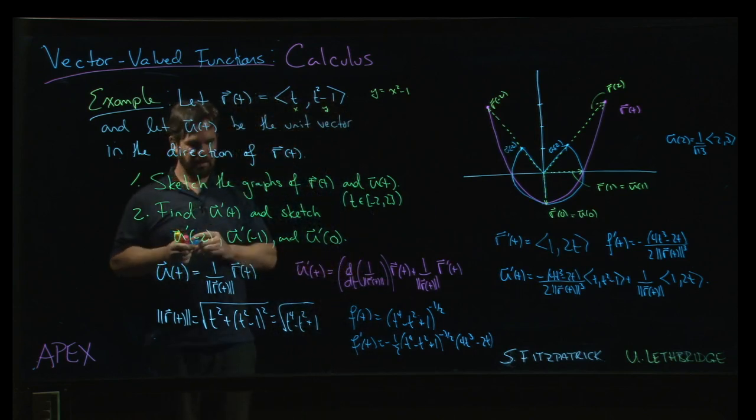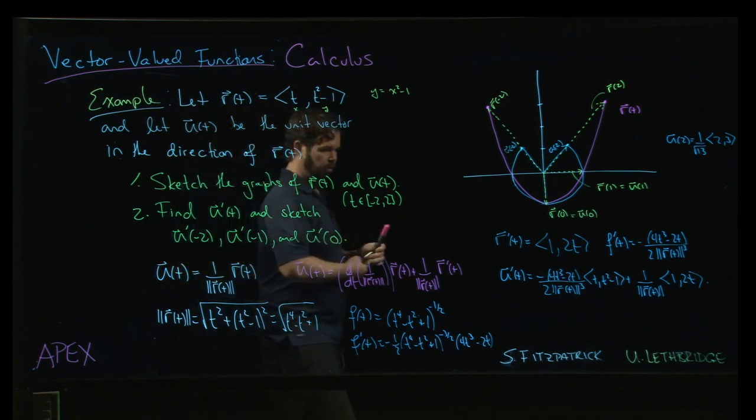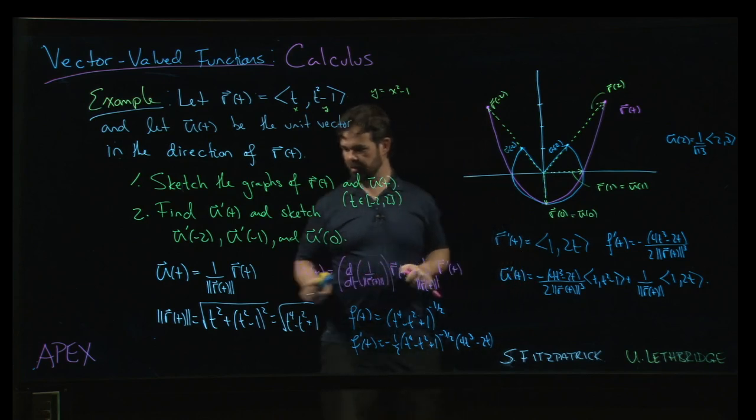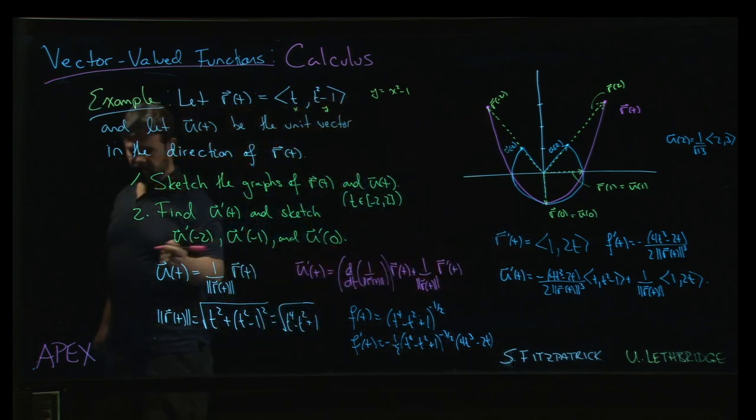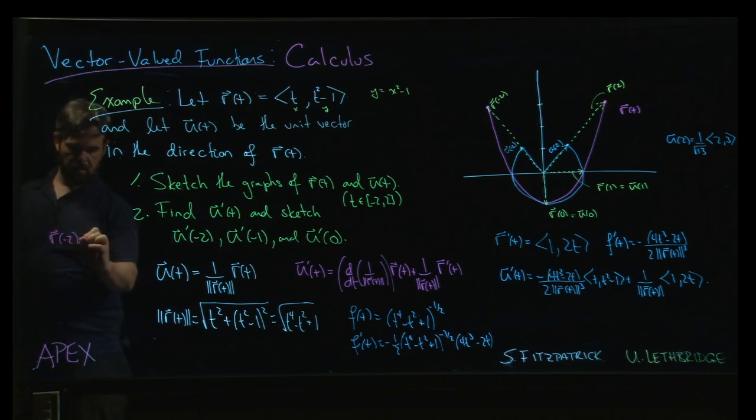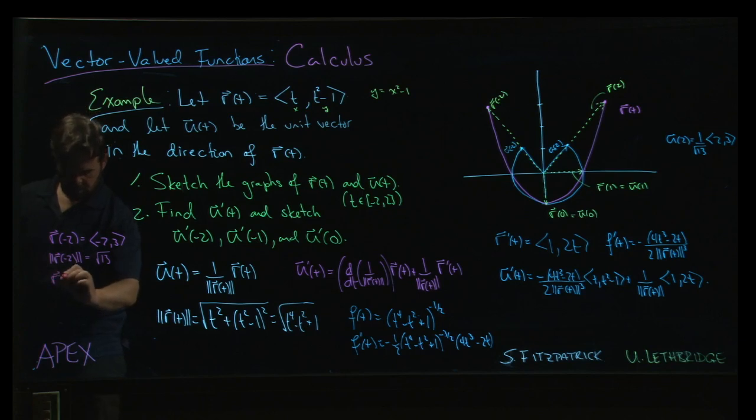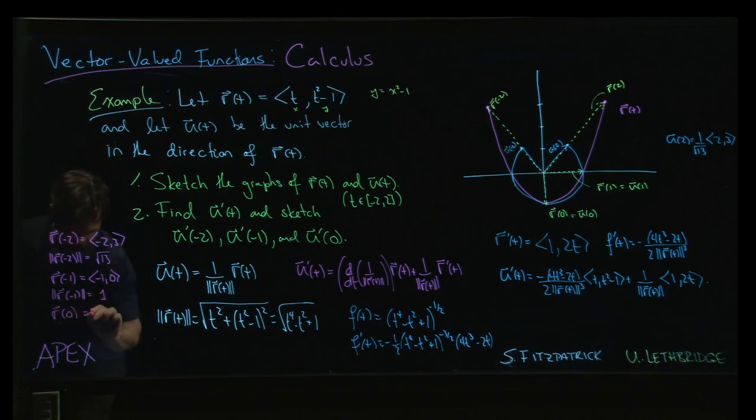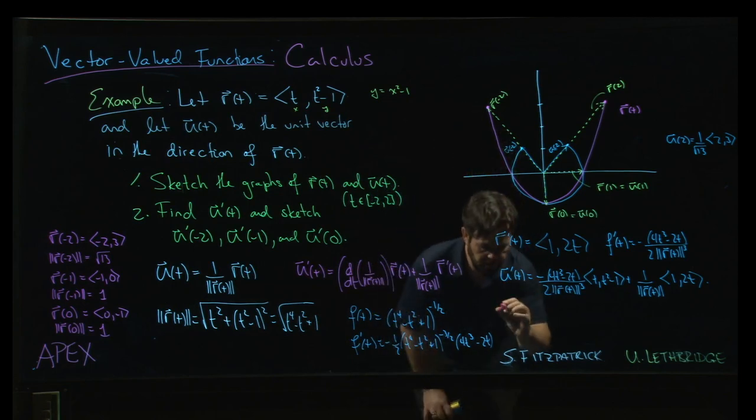So now we can evaluate at various points. Let's just gather that data up over here. r at minus 2 is <-2, 3>, so the magnitude of r at minus 2 is root 13. r at minus 1 is <-1, 0>, so the magnitude of r at minus 1 is 1.